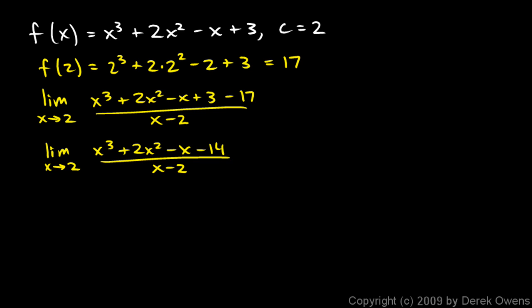We want to factor x minus 2 from the numerator so it cancels. We'll divide the polynomial by x minus 2 using synthetic division. The coefficients are 1, 2, negative 1, and negative 14.